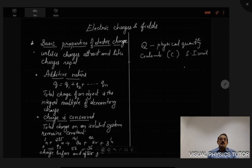We know that the basic properties of electric charges: unlike charges attract and like charges repel, similar to that of a magnet where like poles repel and unlike poles attract.